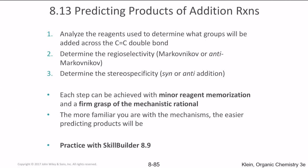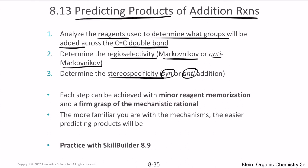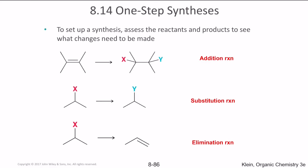To predict the products of addition reactions: first, analyze the reagents to determine which groups will be added across the double bond. Second, determine the regioselectivity — whether it is Markovnikov or anti-Markovnikov. Third, determine the stereospecificity — whether it is syn or anti addition. Each step can be achieved with minor reagent memorization and a firm grasp of the mechanistic rationale. The more familiar you are with the mechanisms, the easier it will be to predict the products.